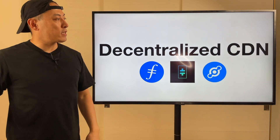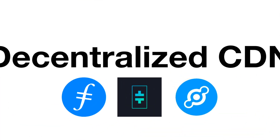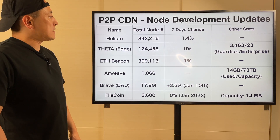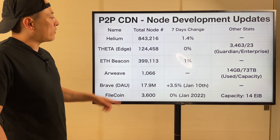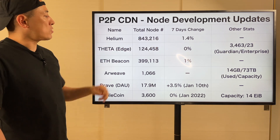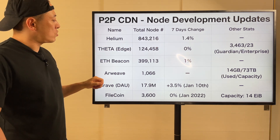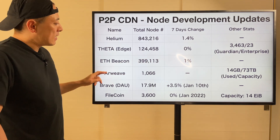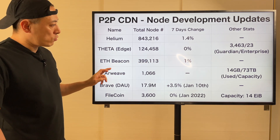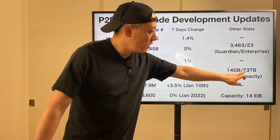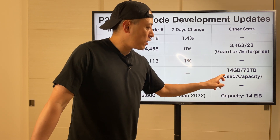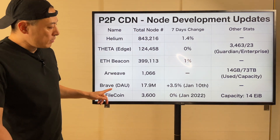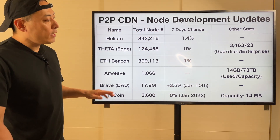Next — Decentralized CDN. P2P CDN network updates. Number one: Helium, plus 1.4%. Theta Network, no big change. IPFS/Filecoin Chain, plus 1%. Aave, no change. Capacity: 73TB, and used is 14GB. Then Brave and Pi Coin — no change.